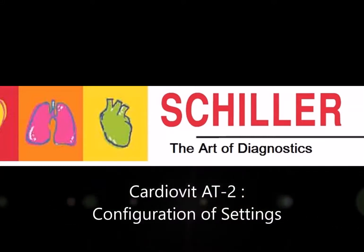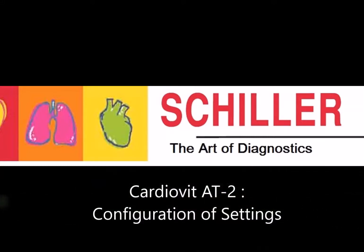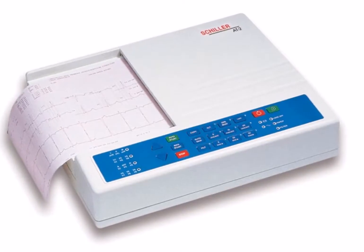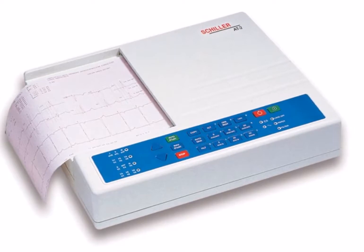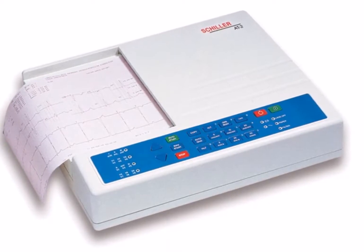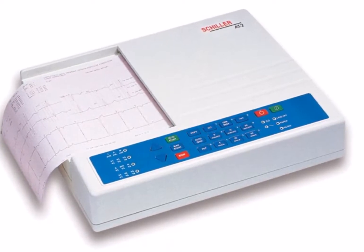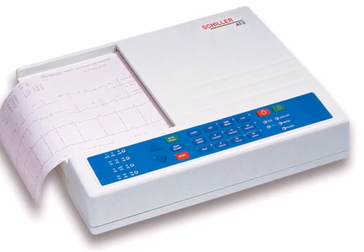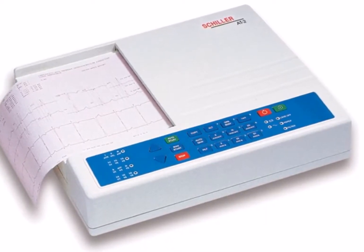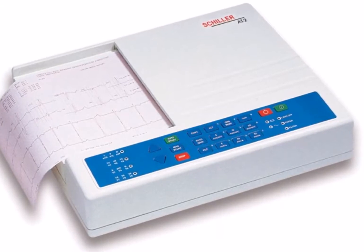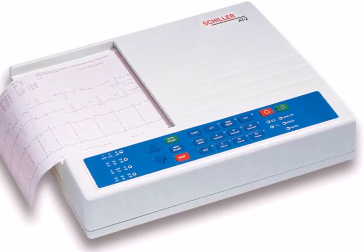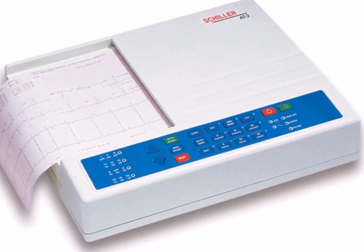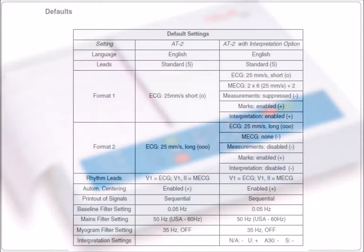Settings for AT2. Each parameter is set by means of a code which comprises combinations starting with the ALT key, followed by a number of keys, and is always confirmed with a stop key. As soon as the ALT key is pressed, the keyboard is dedicated to the programming function.